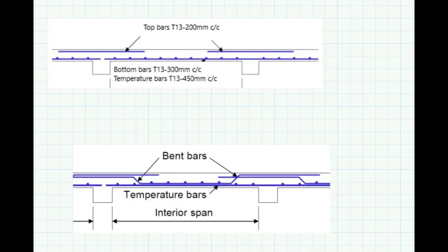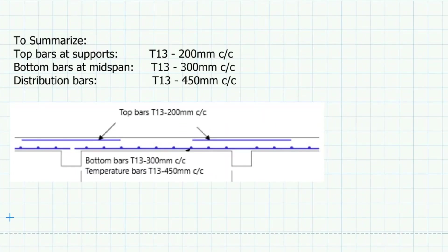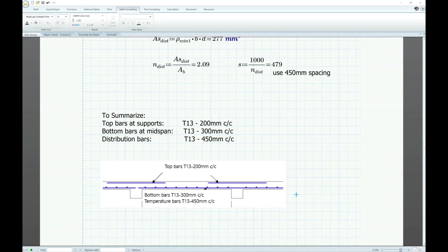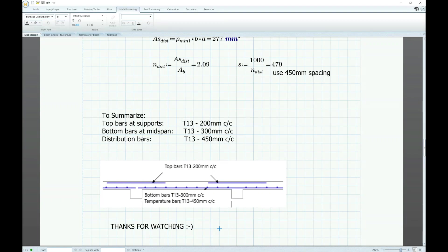There are two ways to arrange the rebars in this slab: as straight bars, or as straight bars combined with bent bars. To summarize, we provide T13 at 200 mm spacing for top bars at supports, T13 at 300 mm spacing for bottom bars at mid-span, and T13 at 450 mm spacing for distribution bars. Note: T13 at 400 mm spacing may also be used for top bars. Thank you.